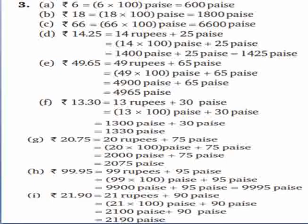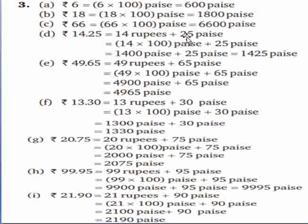Question number three: convert each of the following into paise. Rupees diye hain, paise mein convert karna hai. Part a: rupees 6 — 6 ko 100 se multiply karna hai, rupees remove karenge, last mein paise likhenge — 600 paise. Part b: rupees 18 — 18 × 100 = 1800 paise. Part c: do yourself. Part d: rupees 14.25 — separate karenge: 14 rupees plus 25 paise. 14 × 100 = 1400 paise, plus 25 paise = 1425 paise.